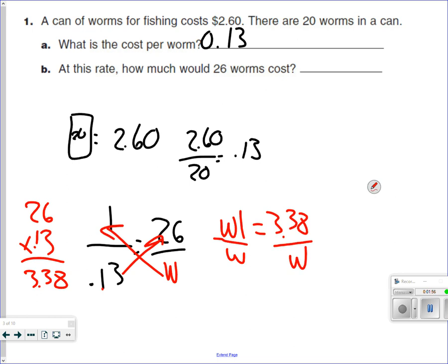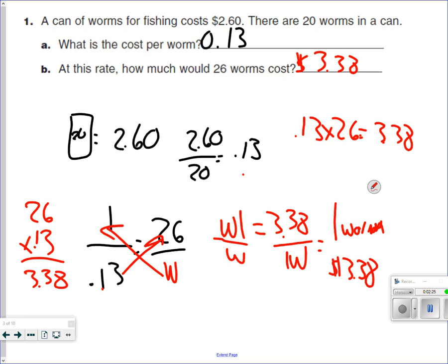Now I'm going to divide this by W, or by 1, I should say. So that means 1 worm is the same as $3.38. You also could have done this, but I'm going to be showing you this method on every single one of these. You could have taken this 0.13 and multiplied it by 26 and you'll also get $3.38. Let's do another problem here.